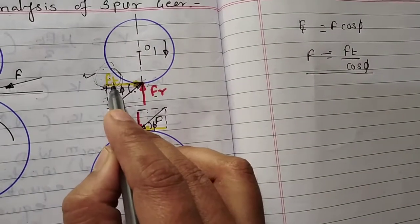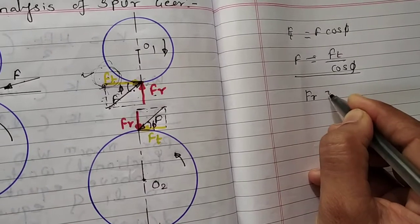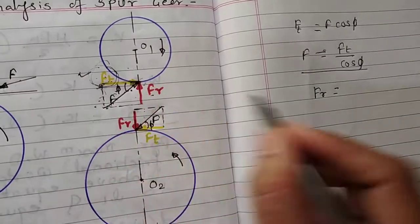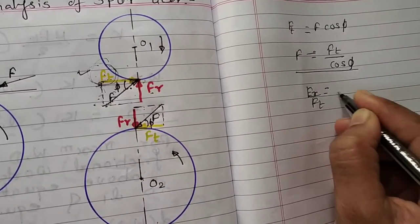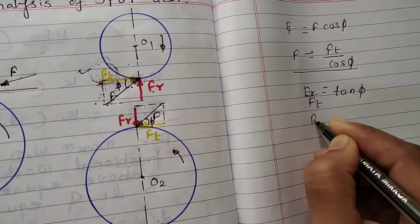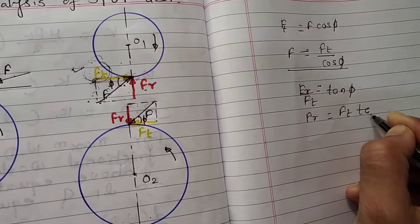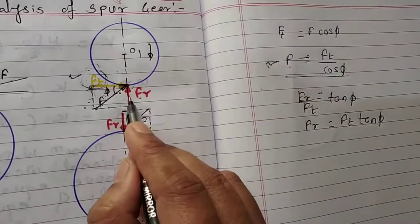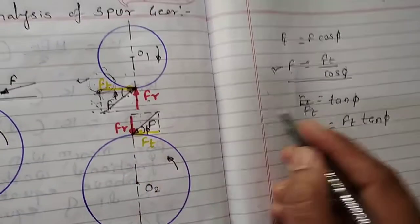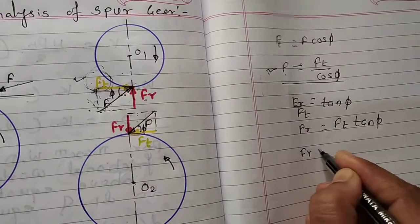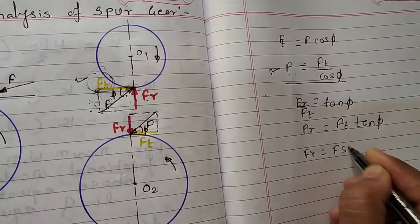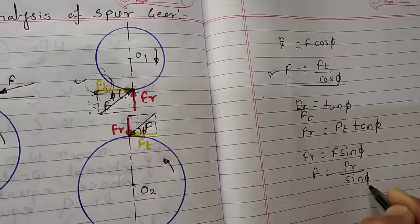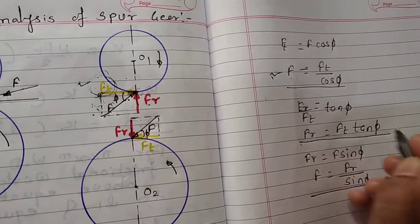Similarly, FR in terms of Ft: FR/Ft = tan φ, so FR = Ft tan φ. Also we can find F in terms of FR. FR is opposite of this triangle, so FR = F sin φ. Therefore F = FR/sin φ. These are very important equations.